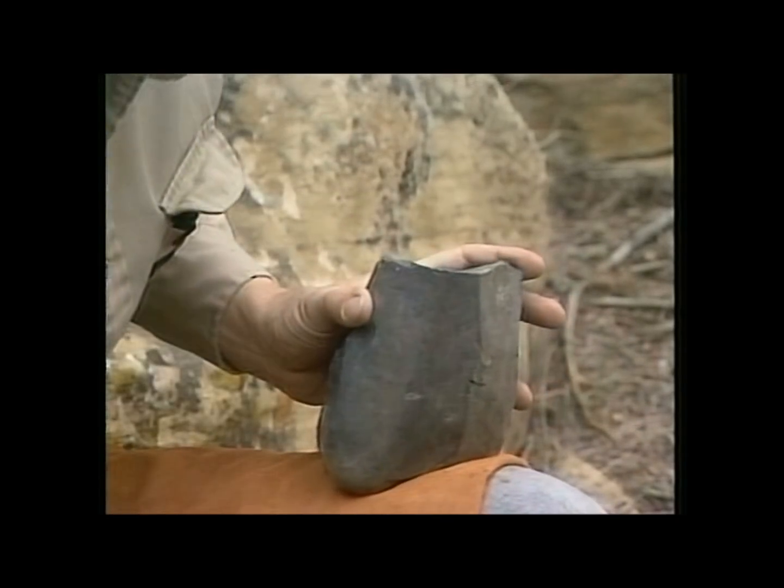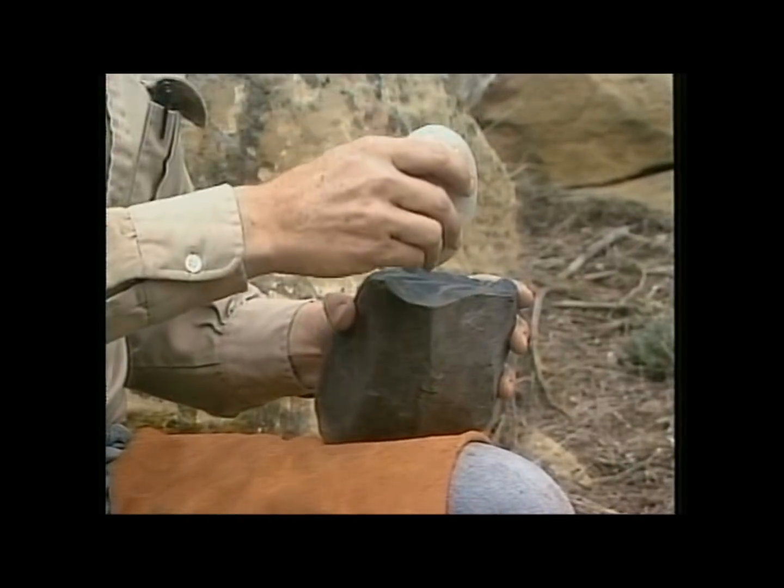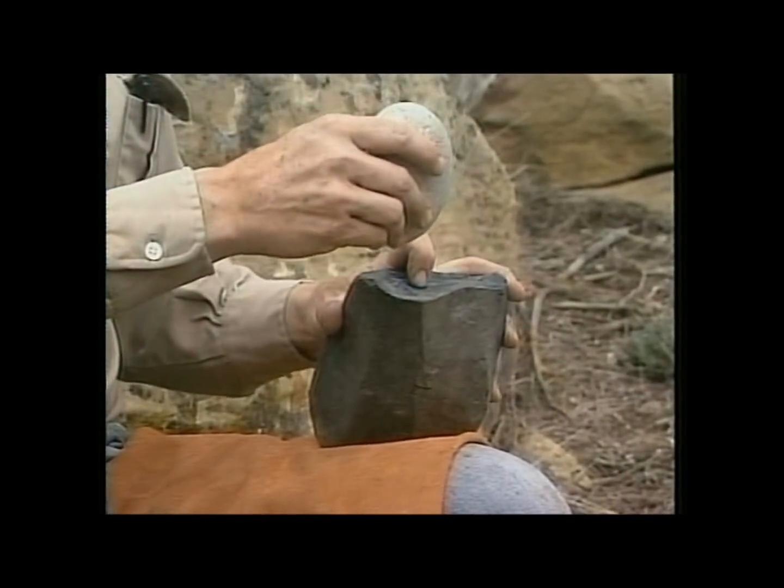So when I strike a piece of flaking material, or stone, what happens is the hammerstone transfers energy into the surface of the material in the shape of a cone.